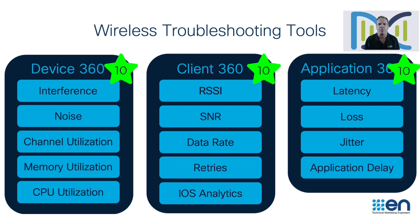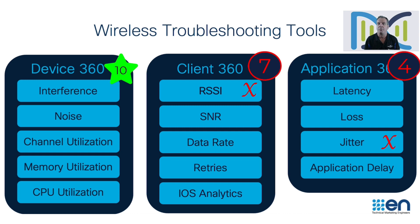In addition to KPIs, we also show various other metrics such as data rate and the number of retries to help you troubleshoot issues. Now, if one or more of these KPIs are not being met, it will lower the health score of that network device, client, or application, so then you'll know exactly what's causing poor performance.